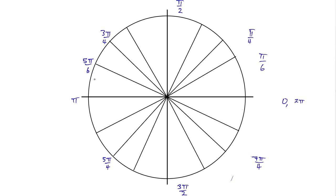We don't use 3pi over 6 — that would just be pi over 2 — or 4pi over 6, which would be 2pi over 3. We always have our angles in reduced fractions. If 6pi over 6 is pi, one more would be 7pi over 6. And the last one, closest to the x-axis again — we're almost at 2pi, which would be 12pi over 6 — so this must be 11pi over 6.